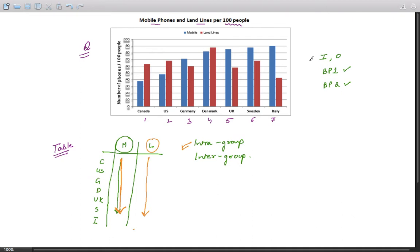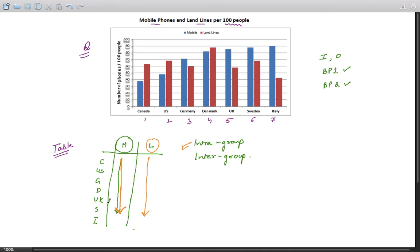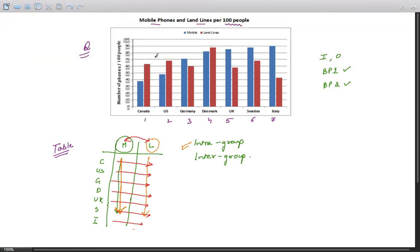Then comes the intergroup. What is intergroup? You have to find out important trends among countries by comparing mobile phones and landlines. You have to move in this horizontal direction. It's not important to discuss all the countries horizontally; however, you need to find important trends. What are these trends? If we look at this chart, there are a few countries where landline usage is more than mobile phones, and some where mobiles are more than landlines.